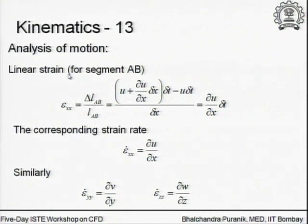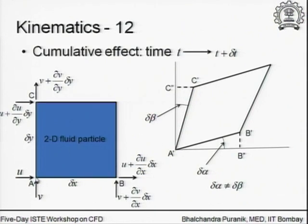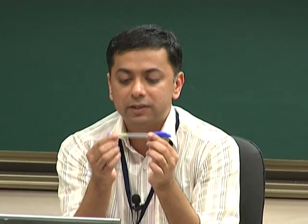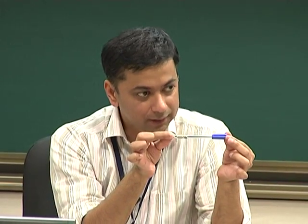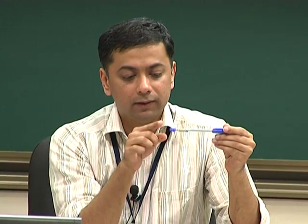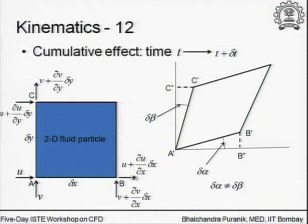Translation is the most obvious — the particle is physically going from one location to the next. Now let us look at the linear strains and correspondingly the linear strain rates. Looking at segments AB and AC marking our fluid particle: for segment AB, the u velocity acts at one end and u plus du/dx times delta x acts at the other. These two are different, so as the element moves, it also gets stretched differently at each end — it undergoes a linear strain. The x-direction velocities cause this linear strain. Similarly, the linear strains for segment AC are caused by the vertical velocities v at A and v plus partial dv/dy times delta x.